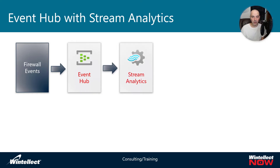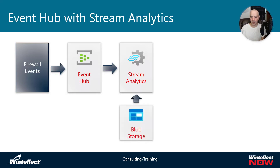Stream analytics has two different kinds of inputs. It can have a stream, which is where it gets data from an event hub, and it can also use reference data from more static sources — something stored in blob storage or a SQL database. Stream analytics can then take the streaming data and this reference data, join them together, filter, and amend data — all kinds of data manipulation using a SQL-like syntax inside of stream analytics.